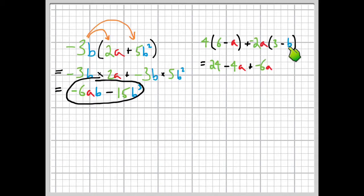Then I have negative 2a times negative b. So, I get a plus, because negative times a negative is a positive. So, plus 2ab. Easy as that.